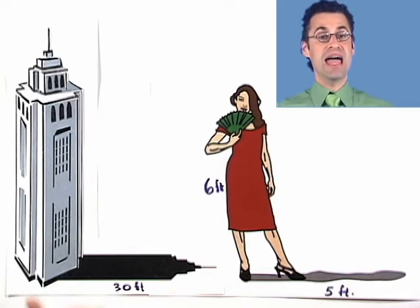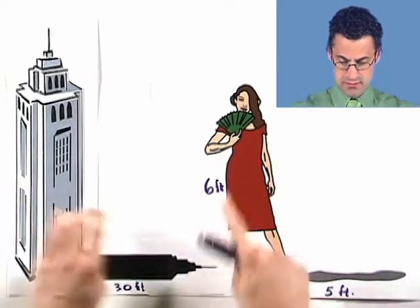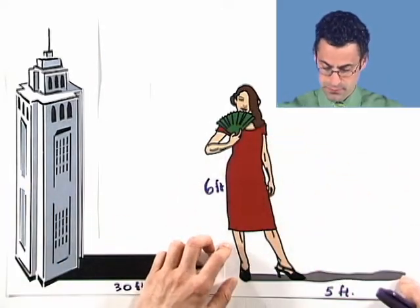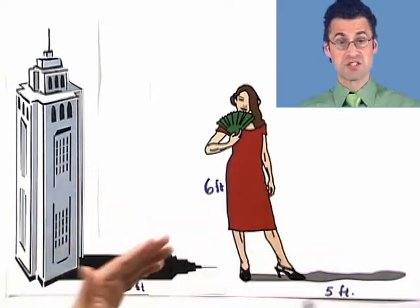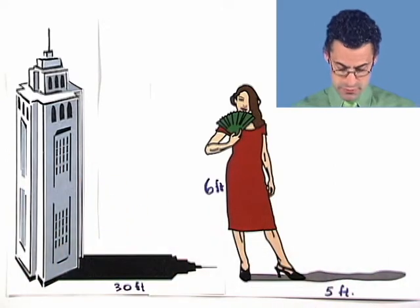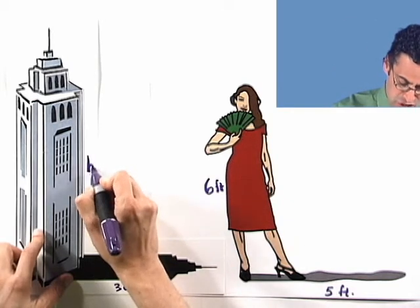And so now I can use proportional reasoning because these two triangles are similar. Therefore, the ratio of corresponding sides are going to generate a proportion when I set them equal to each other. So what do I have? This height, I don't know. I'm going to call it H feet.